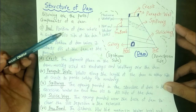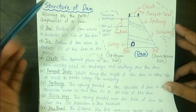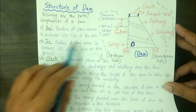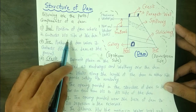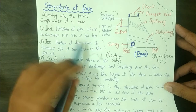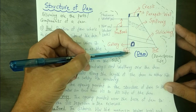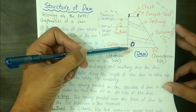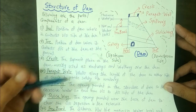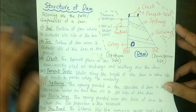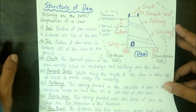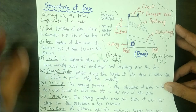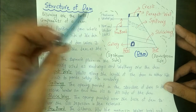First of all we have the portion called the heel. The heel is the portion of the dam where it contacts the upstream side. It is basically the point where the dam is connected with the upstream side at the ground — the point of interaction between the ground and the upstream side of the dam is known as the heel.